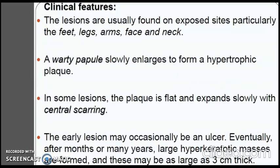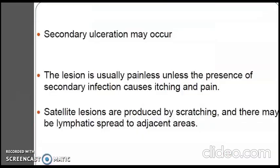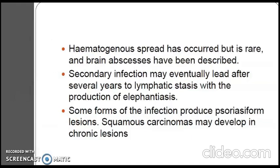Clinical features of chromoblastomycosis: the lesions are usually found on exposed sites, particularly the feet, legs, arms, face and neck. A verrucous papule slowly enlarges to form a hypertrophic plaque. In some lesions the plaque is flat and expands slowly with central scarring. Early lesions may occasionally be ulcers and eventually, after months or many years, large hyperkeratotic masses form, sometimes up to 3 cm thick. Secondary ulceration may occur; the lesion is usually painless unless secondary infection causes itching and pain. Satellite lesions are produced by scratching, with possible lymphatic spread. Hematogenous spread with brain abscesses has also been described. Secondary infection may eventually lead to lymphatic stasis with elephantiasis, and squamous carcinomas may develop in chronic lesions.